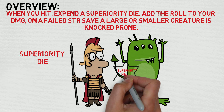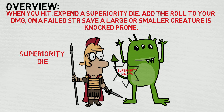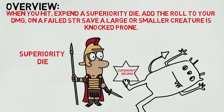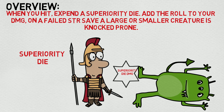If you're unfamiliar with the prone condition, here are the key notes: a creature's only movement option is to crawl — that's true even if it can fly. That essentially halves its movement. The creature has disadvantage on attack rolls, and attack rolls against the creature have advantage if the attacker is within five feet. So it's really good for melee attackers. The creature can also break the condition by standing up, which takes half of its total movement.